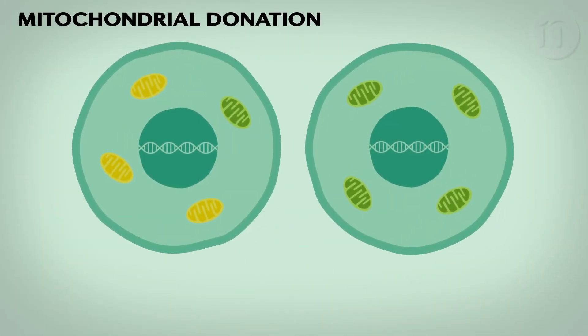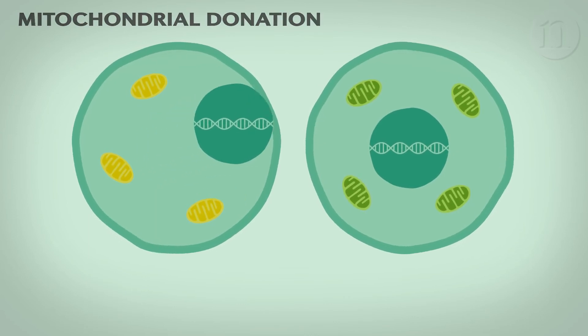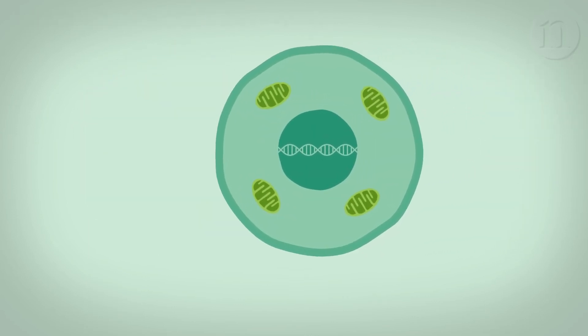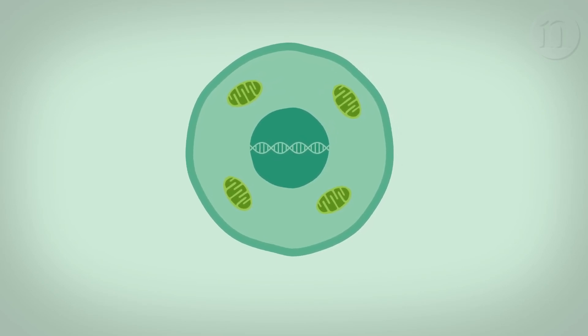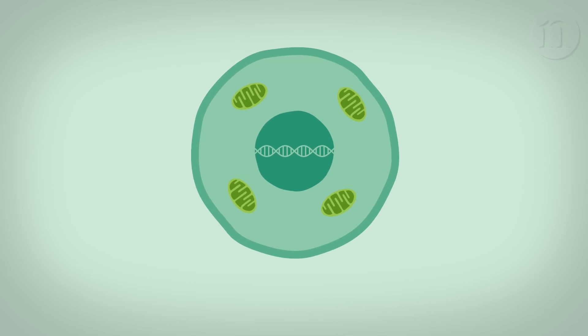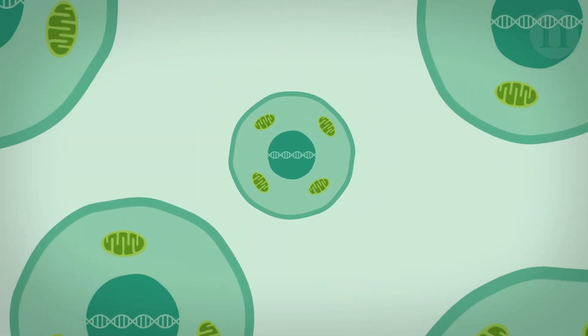One approach is to combine the nuclear DNA from an affected egg cell with healthy mitochondria from another woman. The embryo would then have nuclear DNA from the original mother and father, and mitochondrial DNA from the egg cell donor. This has led some to call such potential infants three-parent babies.